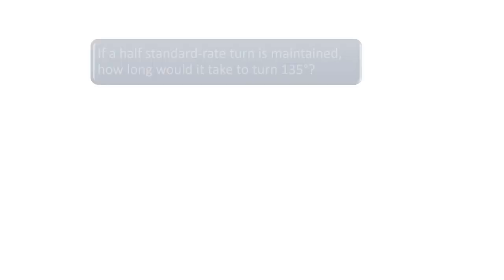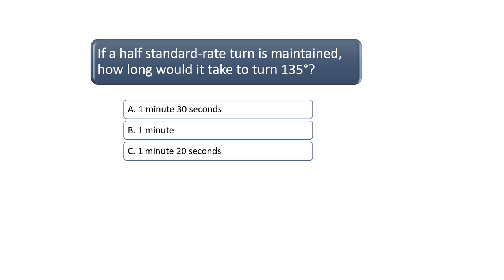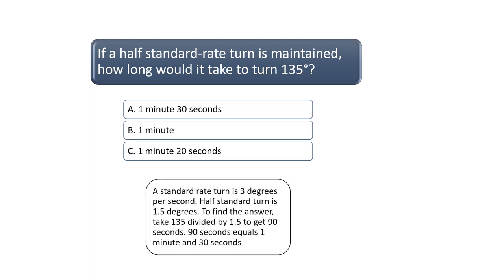If a half standard rate turn is maintained, how long would it take to turn 135 degrees? The standard rate of turn is 3 degrees per second. Therefore, a half standard turn is 1.5 degrees. To find the answer, take 135 divided by 1.5 to get 90 seconds. 90 seconds equals 1 minute and 30 seconds. The correct answer is A.